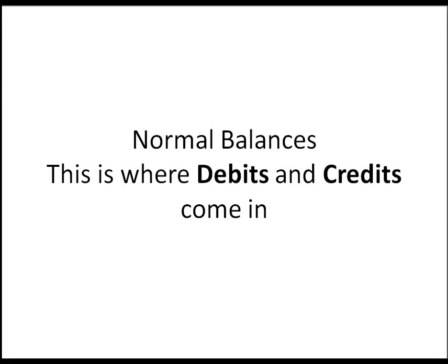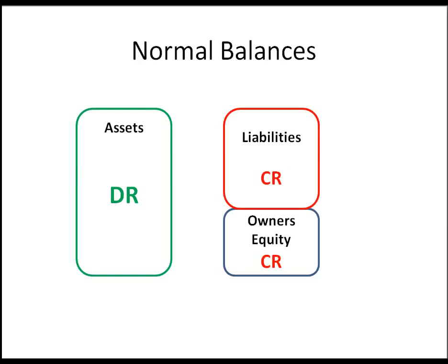Now let's talk about normal balances — this is where debits and credits come in. Back to the accounting equation: assets equals liabilities plus owner's equity. The normal balance of an asset is a debit. The normal balance of a liability is a credit, and the normal balance of owner's equity is a credit.